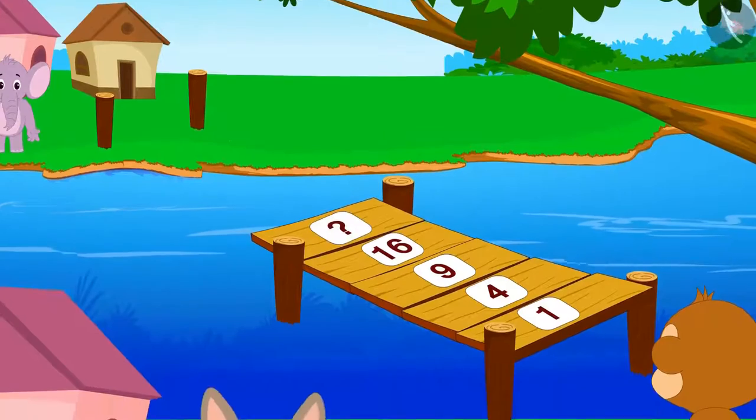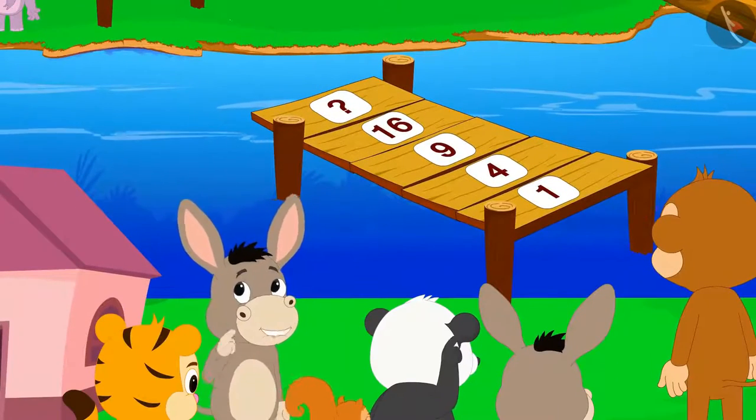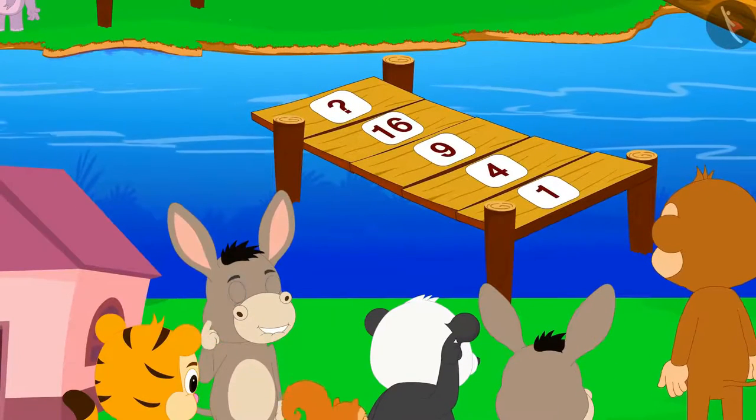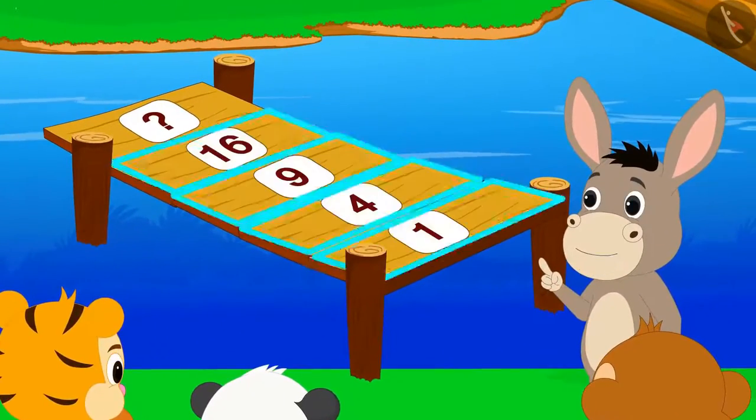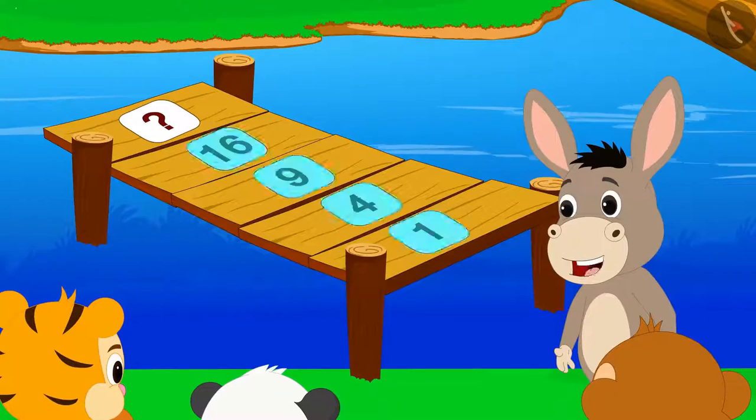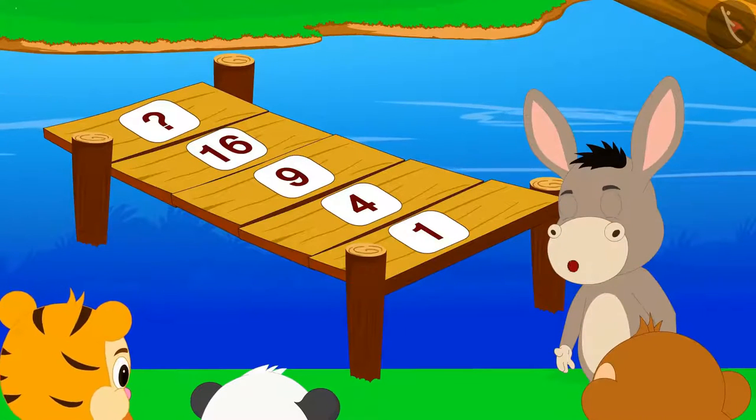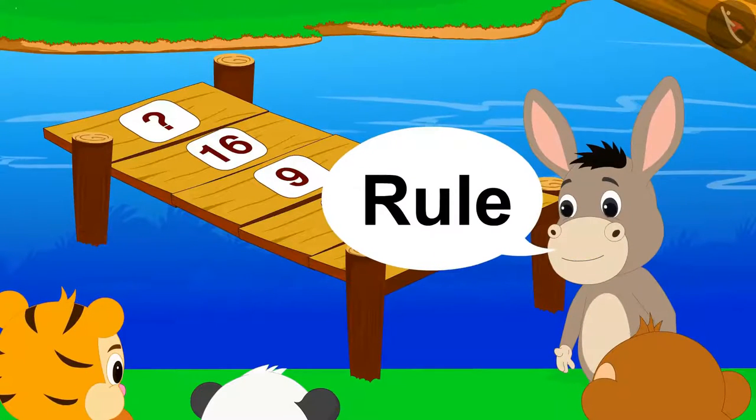All the villagers got absorbed in thinking about what could this mean. Look, there is a number written on every plank of this bridge. There will definitely be a rule between these numbers.